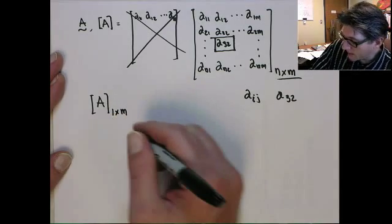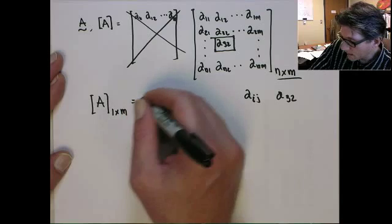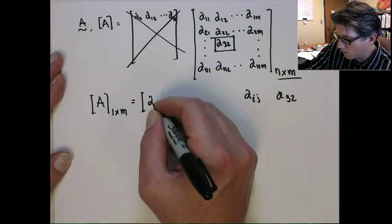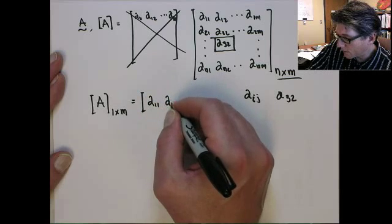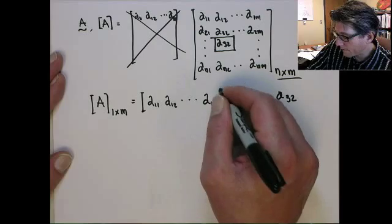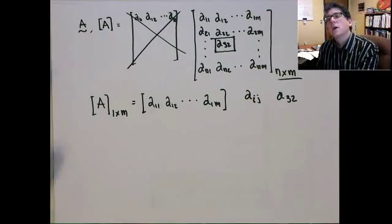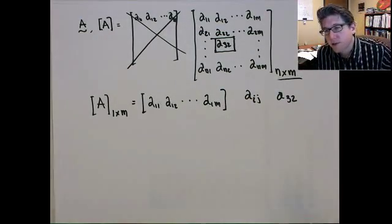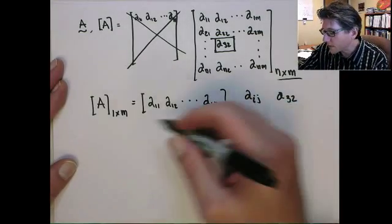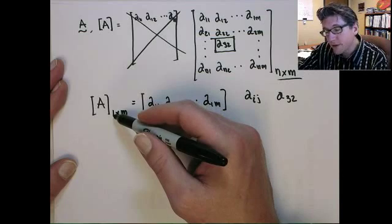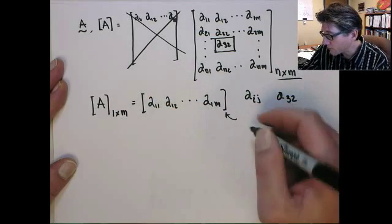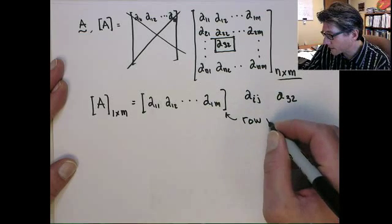...this is a single row. So you'll have a_11, a_12, a_1m. So you can consider all these things as matrices, but sometimes something like this, since it has one dimension of value 1, it could be referred to as a row vector.